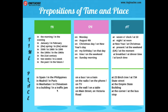¿Cuál es la diferencia entre in y on en términos de lugar? Con in estamos en la ciudad. Pero con on estamos dentro de un bus, dentro de un tren, o estamos siendo escuchados en la radio, o en el teléfono. On a bus, on a train, on a radio, on the phone, on TV, on the wall, on the table.